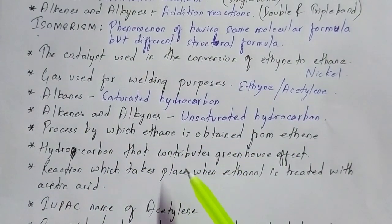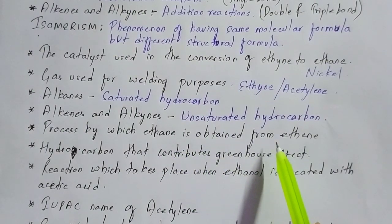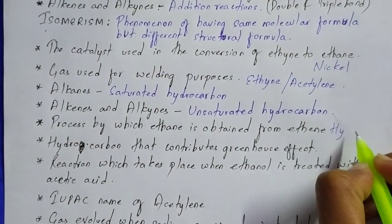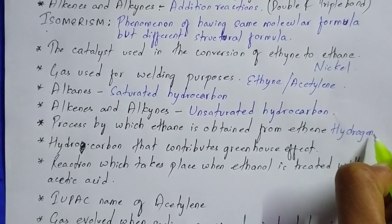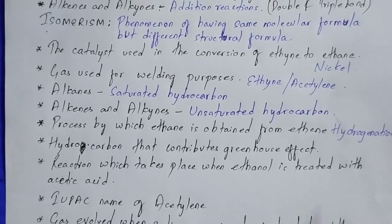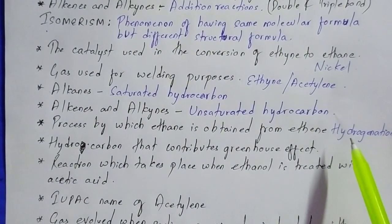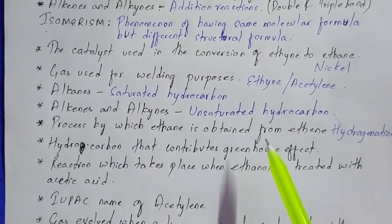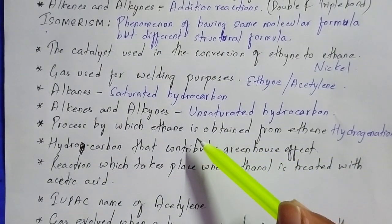You have to name the process by which ethane is obtained from ethene. The process is hydrogenation. Hydrogenation means the addition of hydrogen, whereas dehydrogenation means the removal of hydrogen. When you add hydrogen to ethene, ethane is obtained.